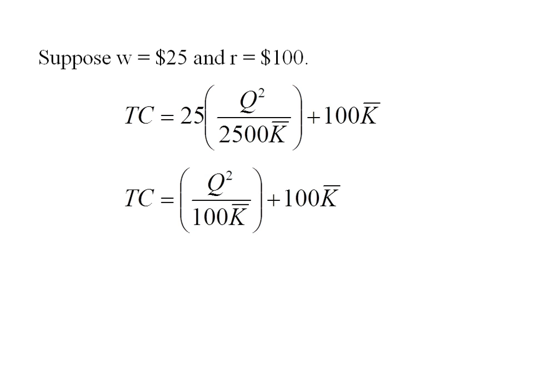I can substitute in that information. I can do a little bit of simplifying, and I get total cost is Q squared over 100 K bar plus 100 K bar.